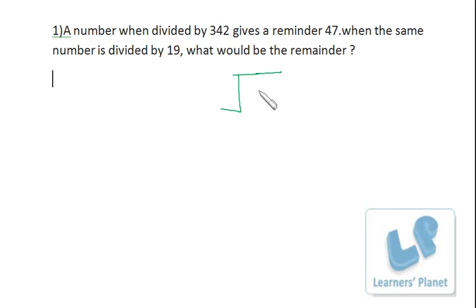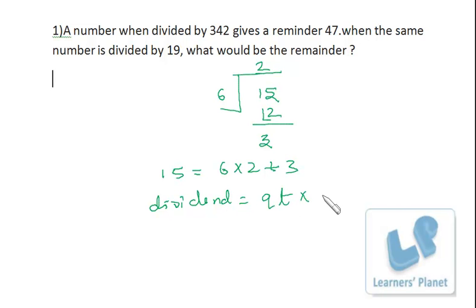Suppose I have a number, say 15, and if I divide 15 by 6, so 6 times 2 is 12 and 3 is the remainder. So 15 can be written as 6 × 2 + 3. That means dividend equals quotient times divisor plus remainder.